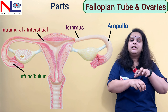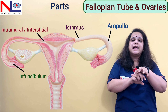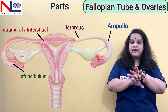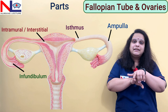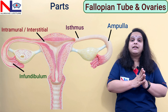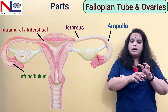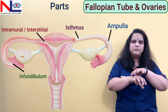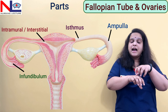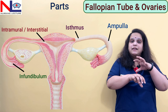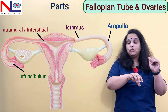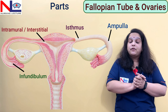In the infundibular part there are 20 to 25 finger-like projections called fimbriae. Among all of them, one is quite longer — this is the ovarian fimbria, which is attached to the ovary. During the ovulatory period, the fimbriae sweep over the ovaries and, by ciliary and peristaltic movement, take the secondary oocyte into the tube. These are the four main parts of the fallopian tube.